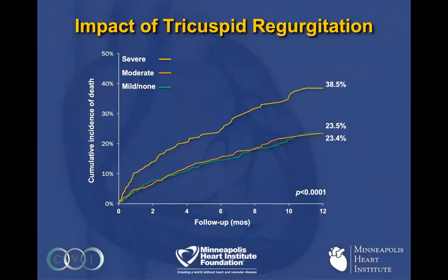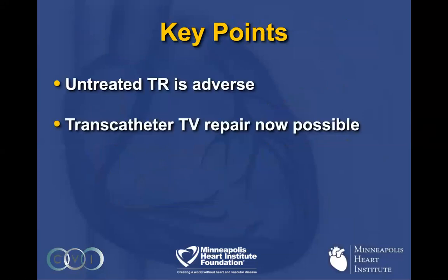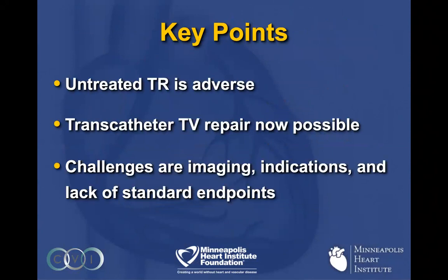We know that TR has a very poor prognosis when left untreated. Data from the TVT registry on MitraClip shows the cumulative incidence of mortality at one year for severe TR compared to mild or moderate — when you leave TR alone at the time of MitraClip therapy, the risk of mortality is almost twice that of patients without severe TR. So severe TR really does need to be addressed. Transcatheter repair is possible now, and we do have to work through imaging, indications, and standardized endpoints as to what type of reduction in TR we need, which will be informed through study in the next several years.